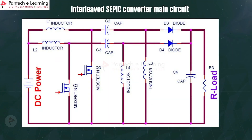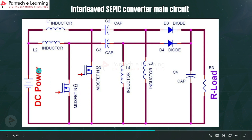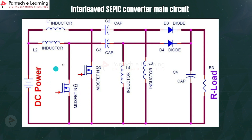This is the main circuit for the interleaved boost converter. Here we can see 4 number of inductors and 2 diodes and 2 power switches — MOSFETs. Here we have used the IRF840 MOSFET. And 4 number of capacitors: 2 here, 1 here, and 1 for filtering purpose.